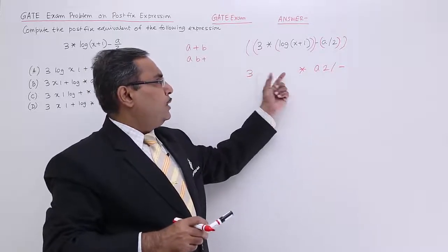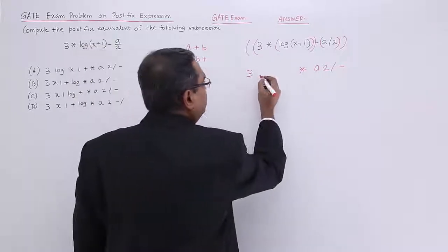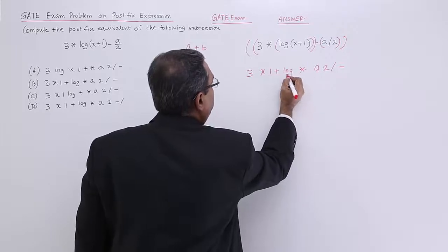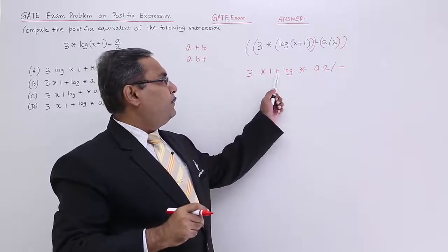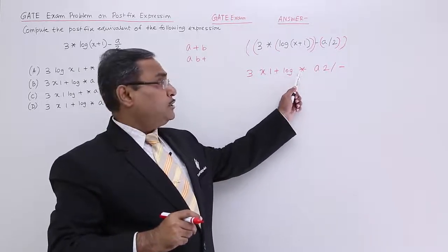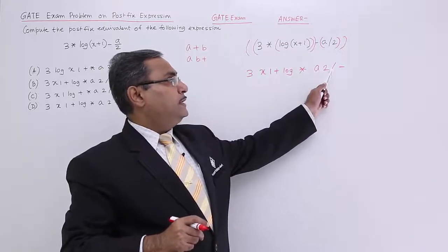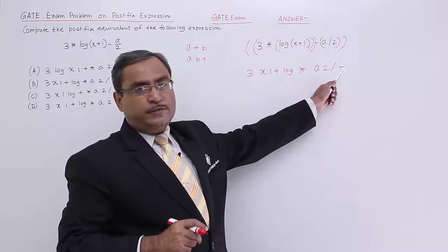What about this? This is 3 into something. So 3 into and here the something will be there. And what is this? This is x plus 1. So x 1 plus and log will be applied on that. So it will be 3 x 1 plus log will be applied on that. Multiplication will take place next. And then a 2 slash will take place. And then this minus this will take place due to the presence of this minus.